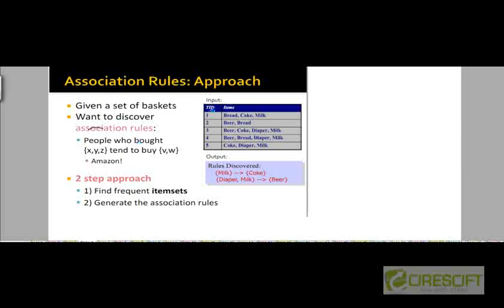For our purposes, we are going to imagine that we are looking primarily at brick-and-mortar stores. So we are interested in association rules corresponding to frequent item sets, not association rules between item sets that are not frequent. We are going to adopt a two-step approach: in the first step, we find these frequent item sets, and then in the second step, we generate association rules from these frequent item sets.